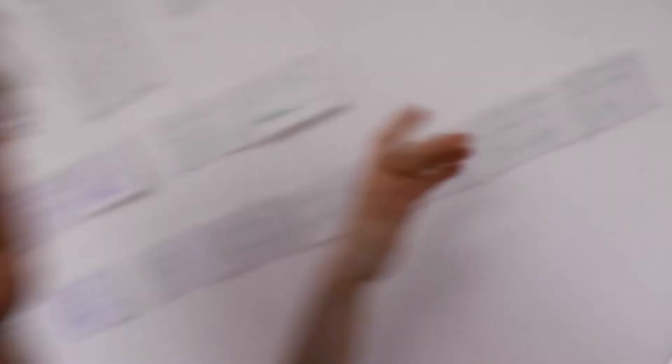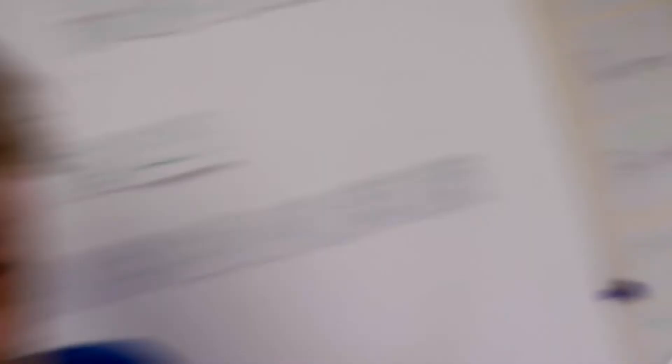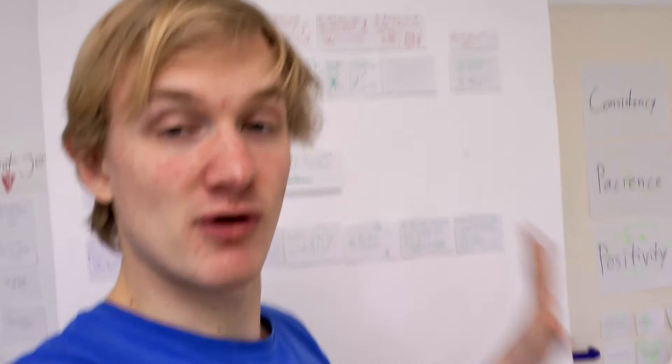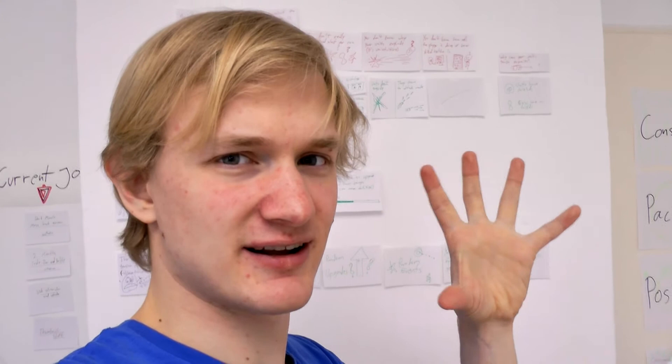Then another one, you don't know why your units explode. It's super unintuitive. Why should you make your own units explode? And actually I think I have a really good fix for it. We just don't make the units explode. We just turn them into attack mode instead. And the way this works is if you swipe over them they don't blow up. They just turn into that direction and start shooting for a while. And while they're shooting they get smaller and smaller so they're using up their energy. And essentially it does exactly the same thing.